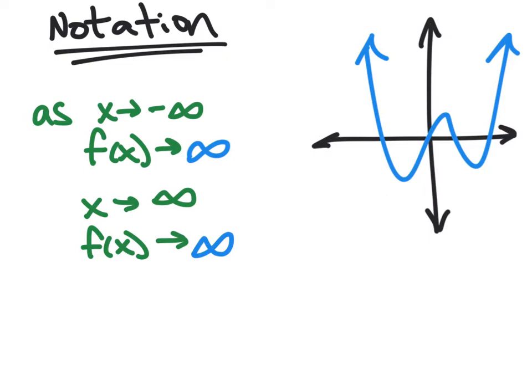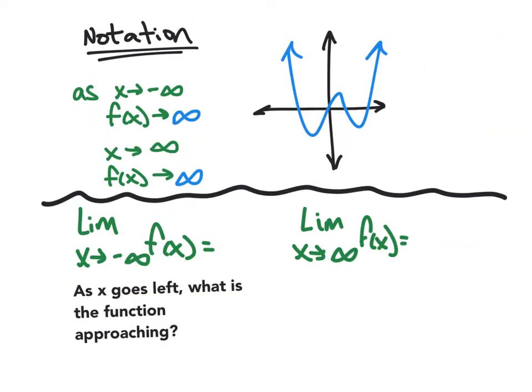Now we can also represent this with limit notation, and limits are a huge part of calculus. So here's how limit notation is working. We can read it as the limit as x goes to negative infinity of f(x) equals, and what this means is as x goes left, what is the function approaching? So as x keeps getting more and more negative, what's the function doing? It's going off to infinity. And so the limit as x gets more and more positive is also infinity because as x got more positive, so did the range. So it's basically the same answers, but this is a more proper notation, especially whenever we get to calculus.